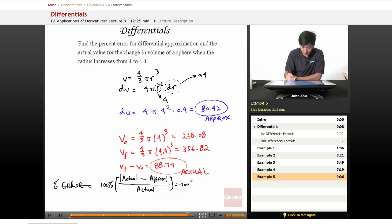We get 100% times (88.74 - 80.42) over 88.74, which gives us 9.4%.